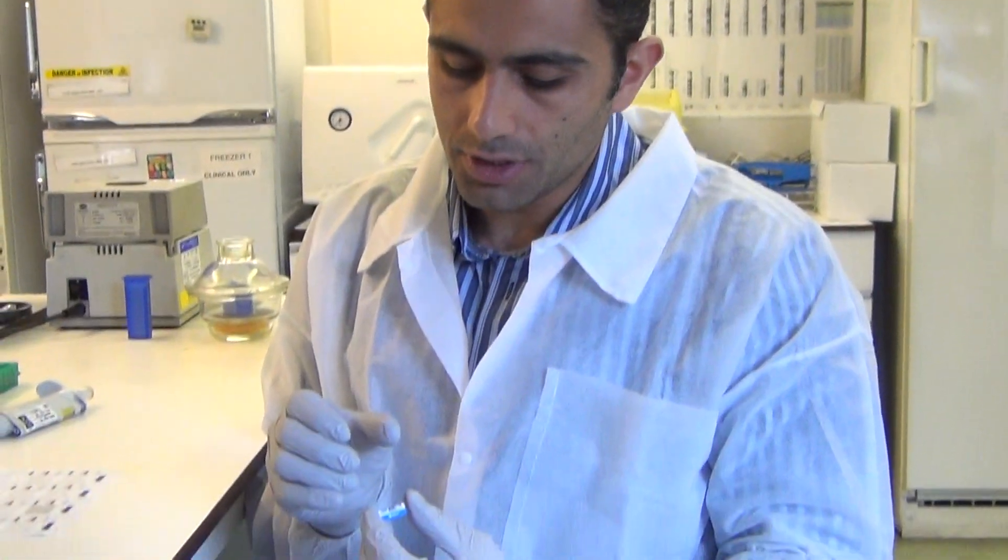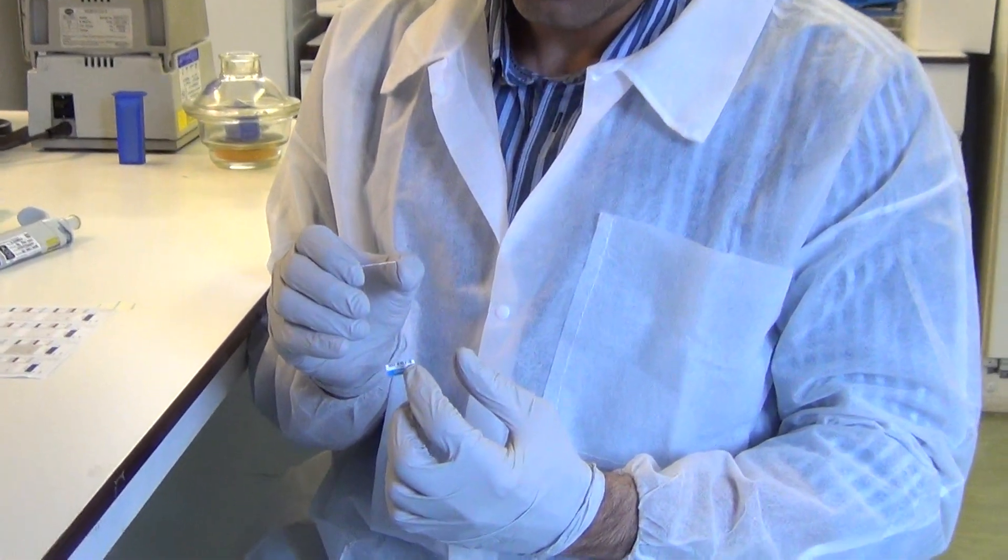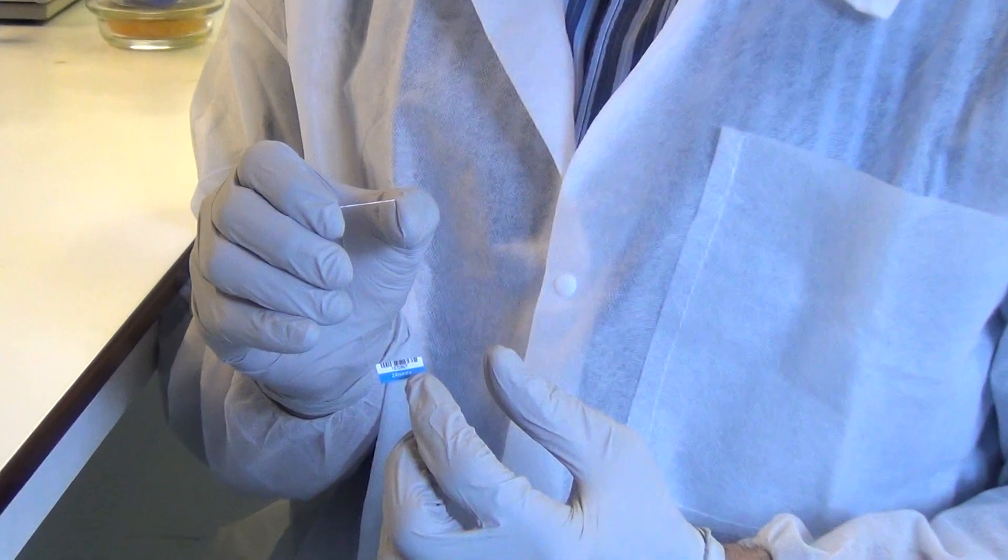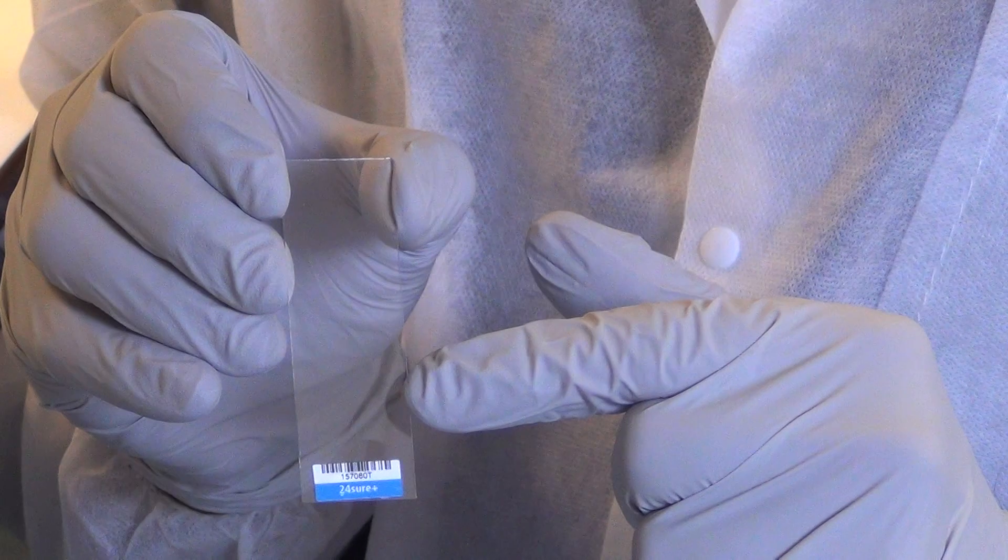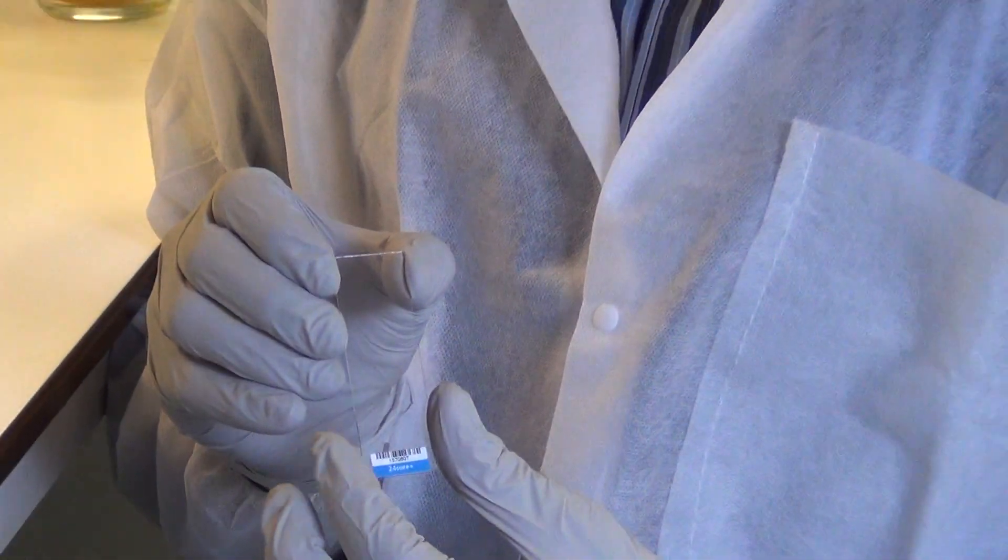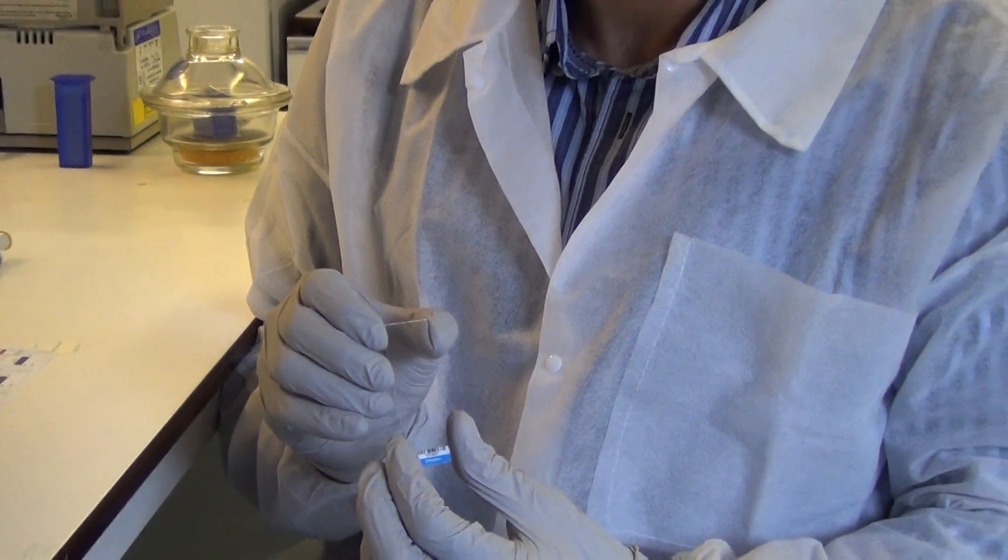In this step, the resuspended labeled products are loaded onto the array slides. On this barcoded slide, there are two arrays printed at the top and bottom positions. Care must be taken when dispensing the sample to prevent the formation of air bubbles, which would interfere with the hybridization.